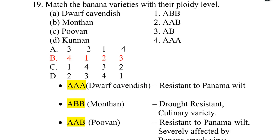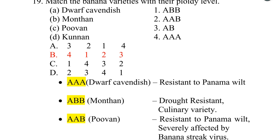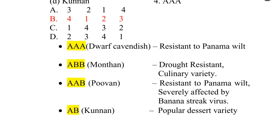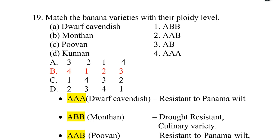Match the following banana varieties with their genome level. Dwarf Cavendish — AAA genome — resistant to Panama wilt. Monthan — ABB genome — drought resistant and used for culinary purposes. Poovan — AAB genome — resistant to Panama wilt but severely affected by banana streak virus. Kunnan — AB genome — a popular dessert variety. The correct answer is option B: 4, 1, 2, 3.